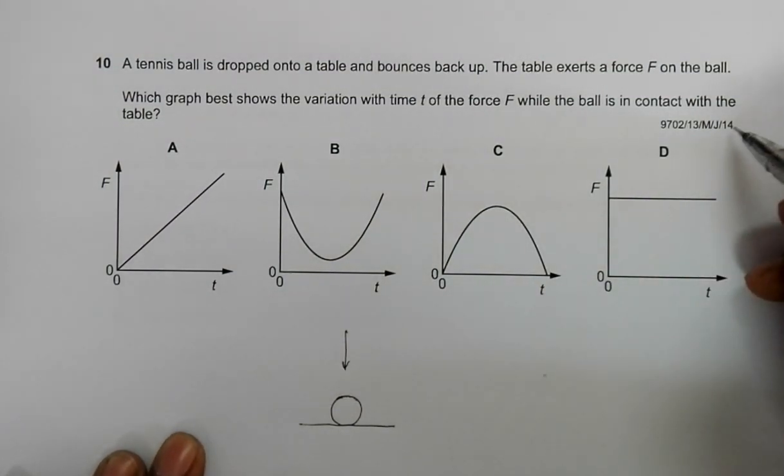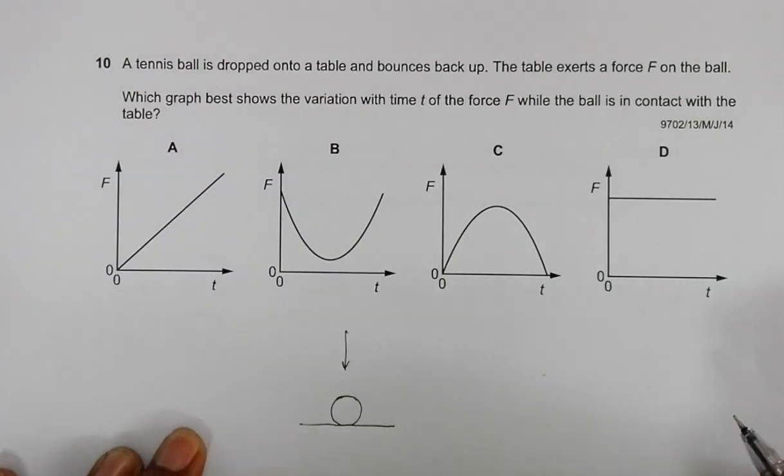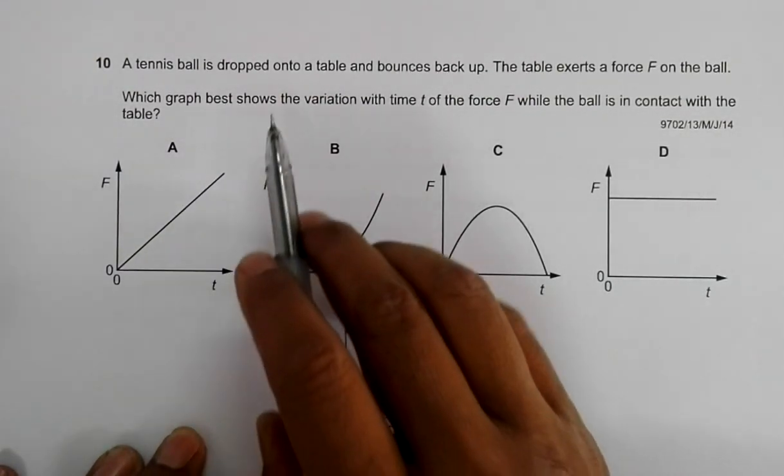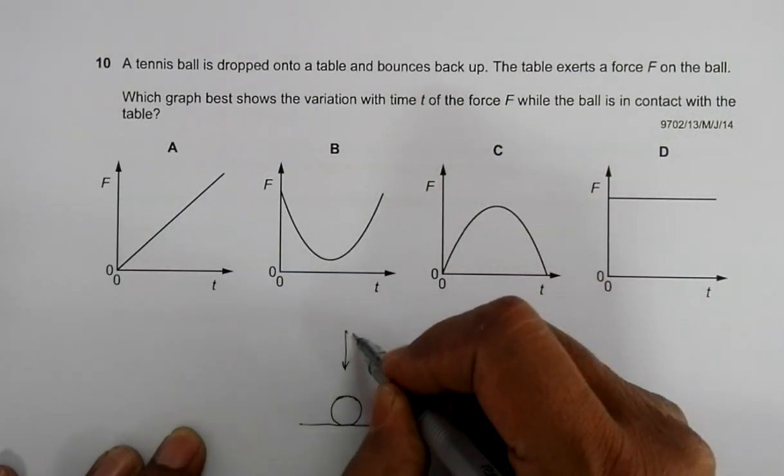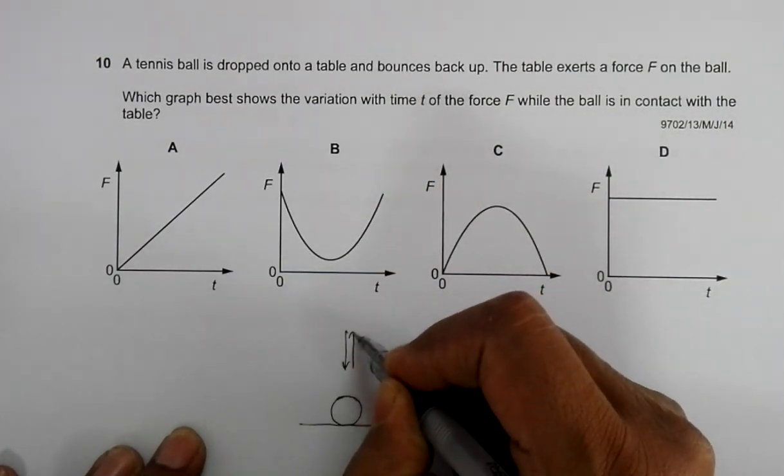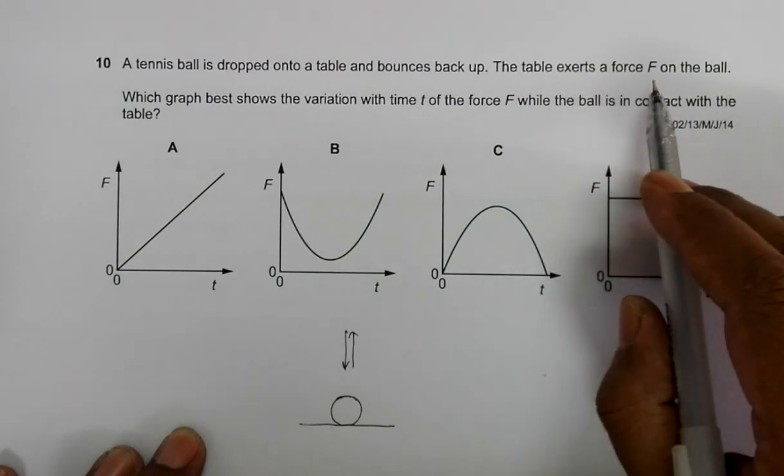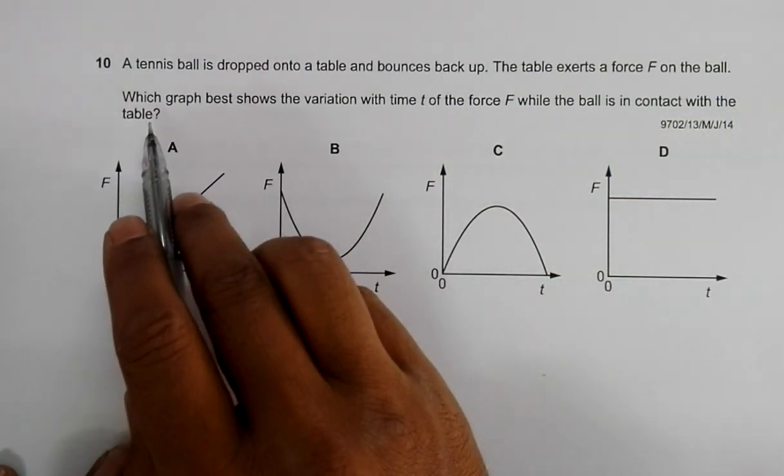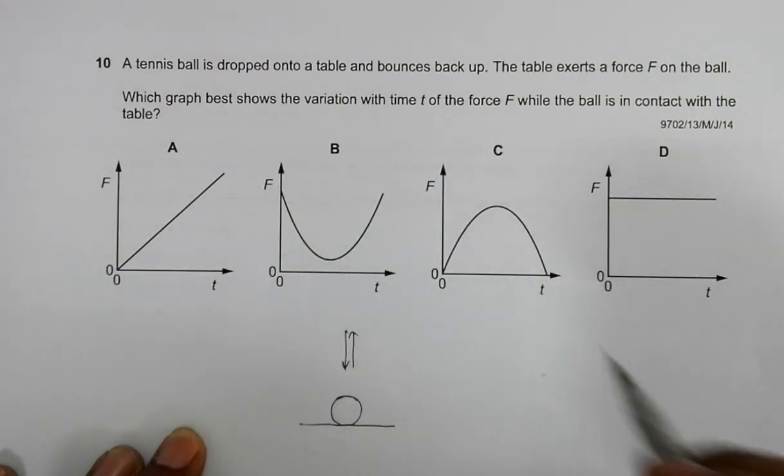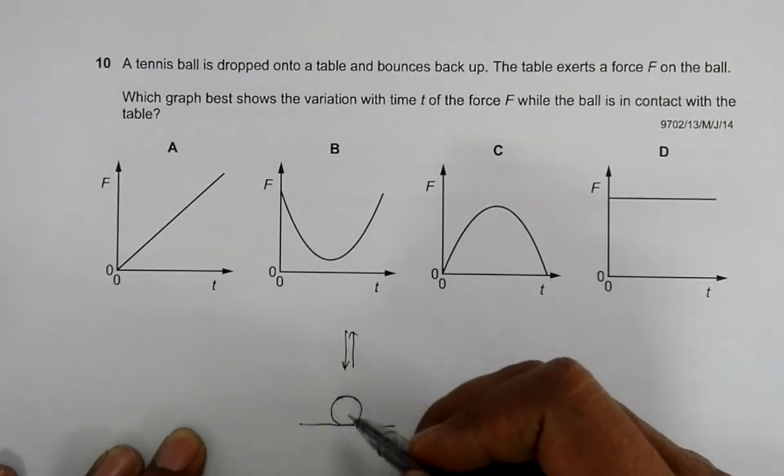Hello folks, this is 2014 major paper 13, question number 10. It says that a tennis ball is dropped onto a table and bounces back up. The table exerts a force F on the ball. Which graph best shows the variation with time t of the force F while the ball is in contact with the table?